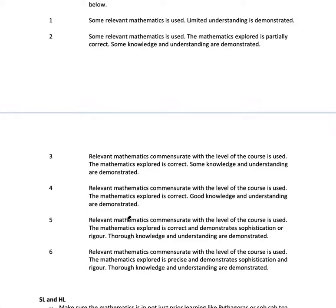5 is, got some fancy words here. It says, the exploration explores correct and demonstrates sophistication or rigor. Now I'll get to what those words mean, but that basically means that you have to go into the mathematics that's in the higher level course and not in the standard level course. And then, 6 is, it's precise, which means there's no error whatsoever, and demonstrates sophistication and rigor. So both of them, this is sophistication or rigor, this is sophistication and rigor.